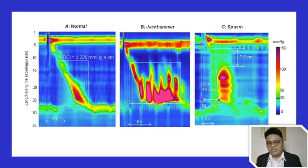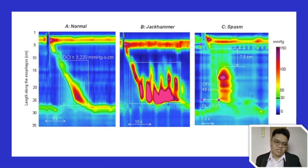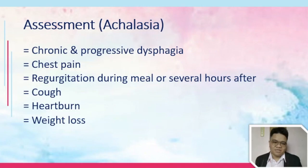These are the manometry results. The red color usually shows the pressure, and as you progress down, it represents the length along the esophagus. This was explained to us by a gastroenterologist.